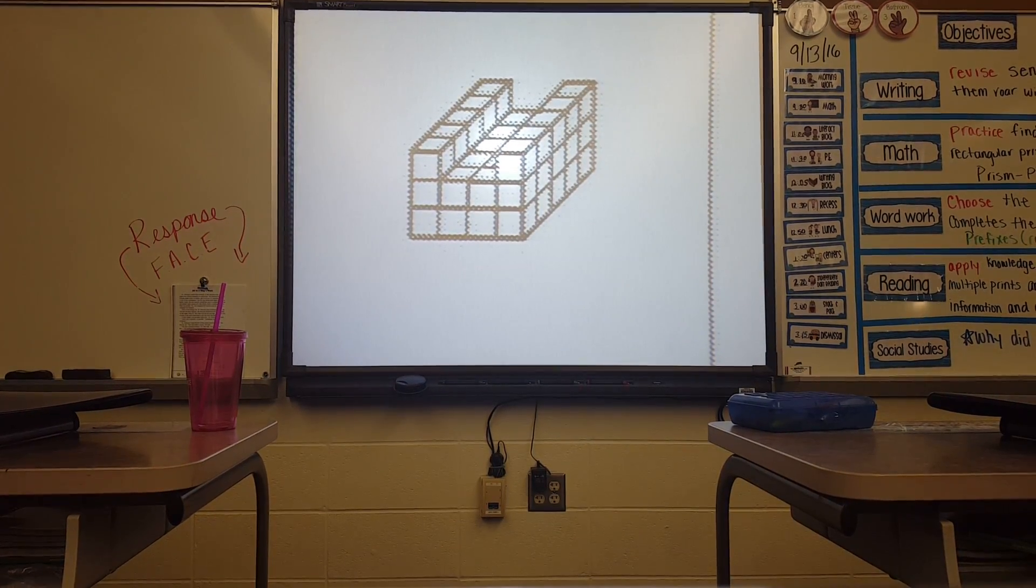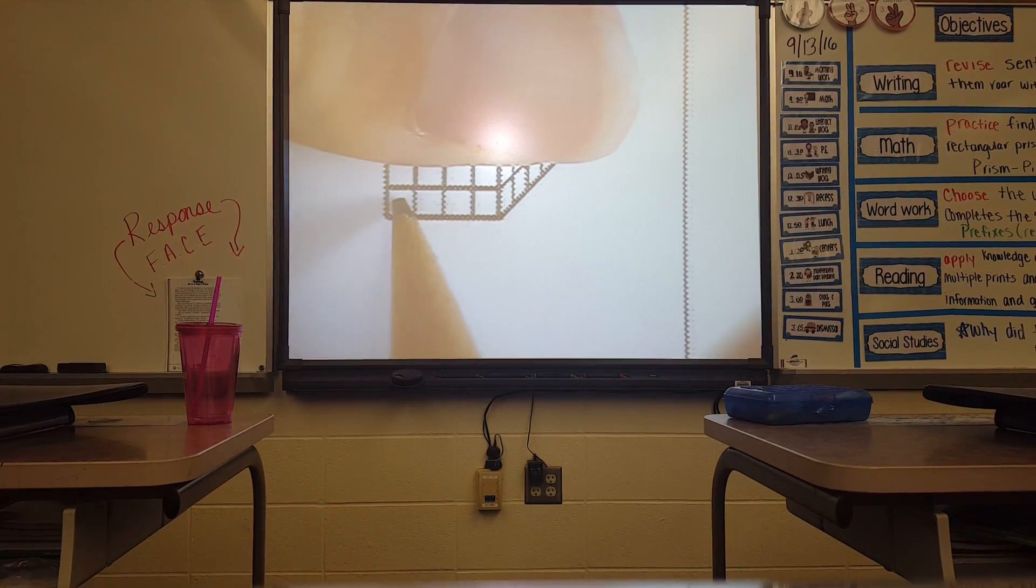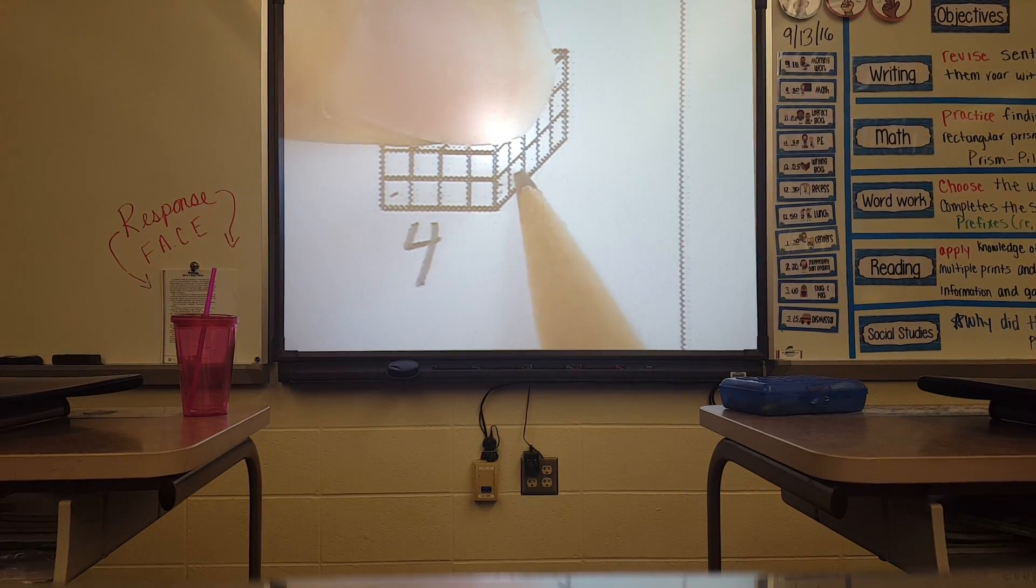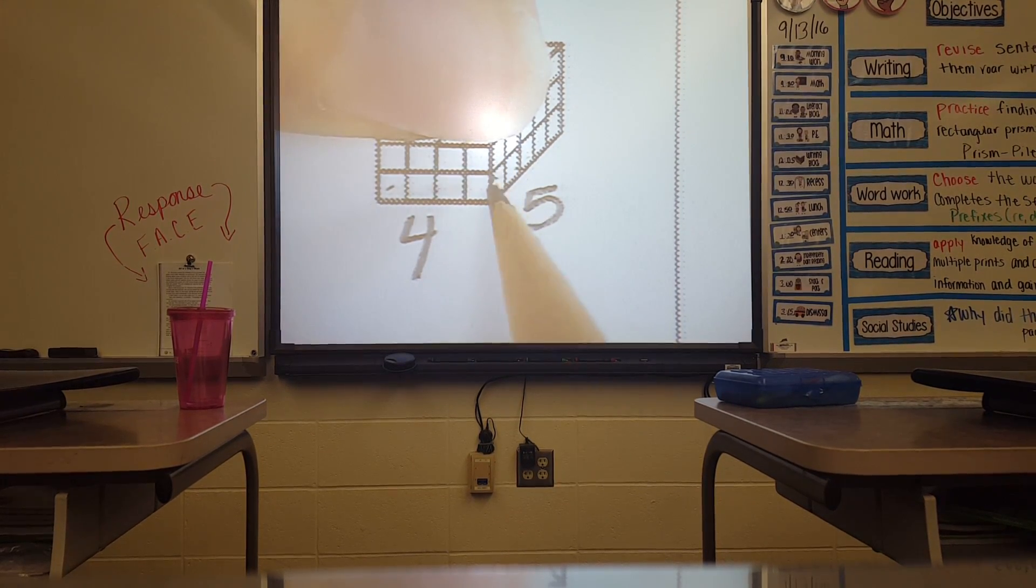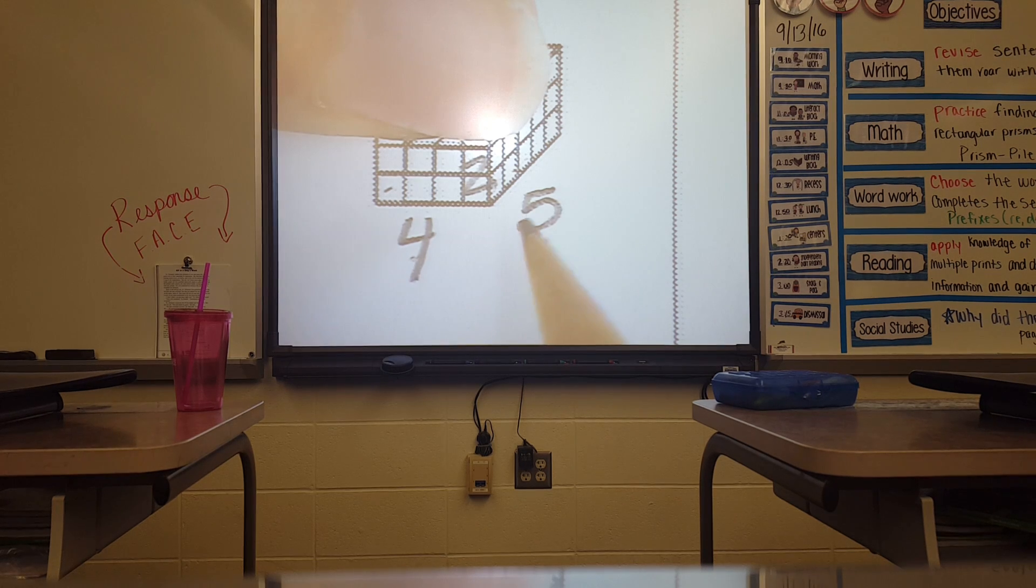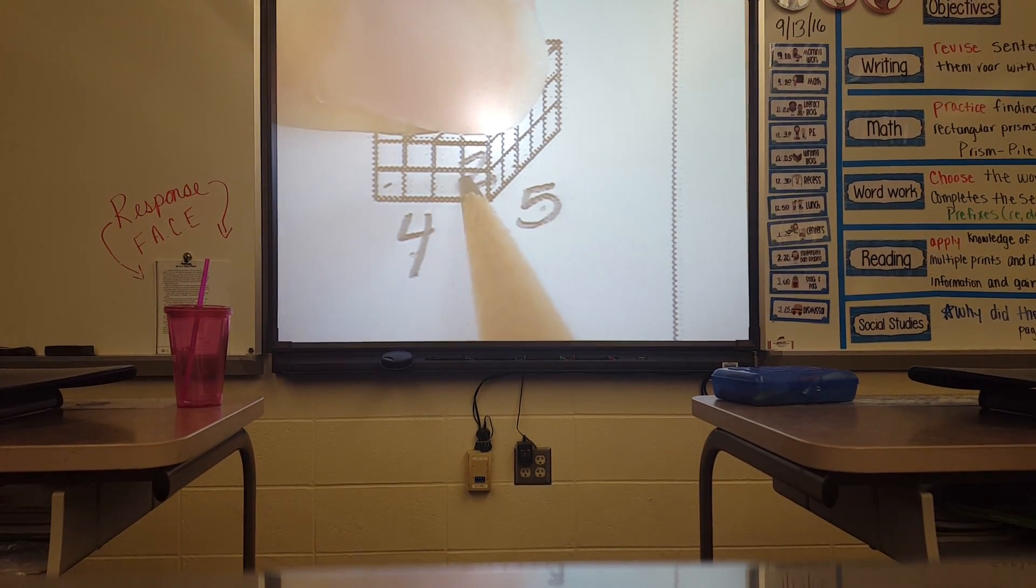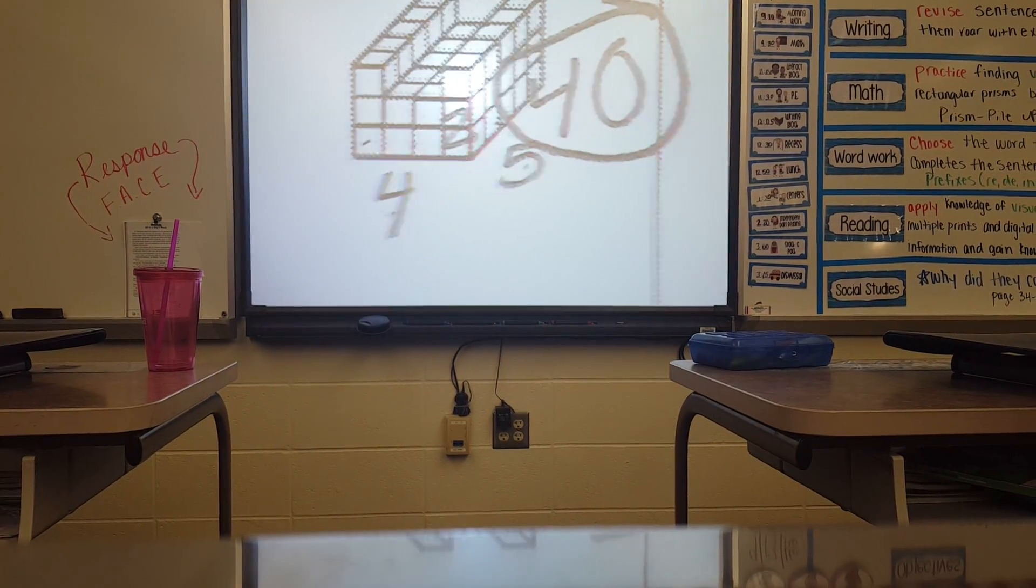The length is—and now I'm only looking at this bottom shape—1, 2, 3, 4, so 4. My width is 1, 2, 3, 4, 5. Now look at my height. For only the bottom shape, it's 2. So 4 times 5 is 20, 20 times 2 is 40. That means the bottom shape is 40.